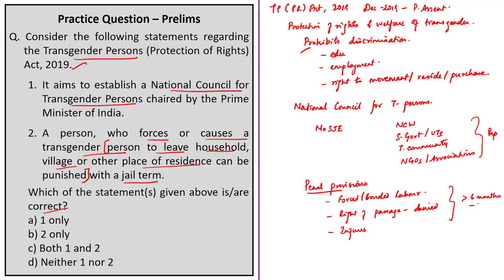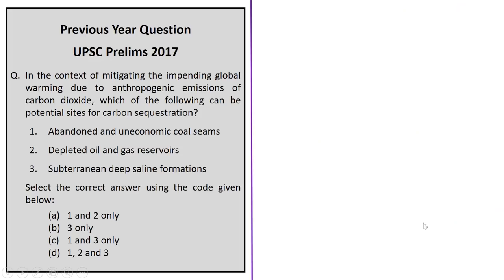Looking at Statement 1 — it says the act aims to establish a National Council for Transgender Persons chaired by the Prime Minister of India. This is incorrect because the council is headed by the Union Minister of Social Justice and Empowerment. Statement 2, which says that forcing a transgender person to leave their household can be punished with a jail term, is a correct statement. Therefore, option B — 2 only — is the correct answer.